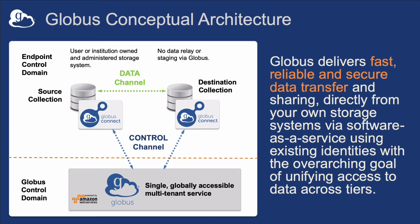In fact, Globus can reduce your transfer times even more dramatically. The Globus data channel, which may be encrypted, uses a protocol called GridFTP, which, in conjunction with a proper network architecture, can achieve transfer speeds of roughly 20 times that of SCP.